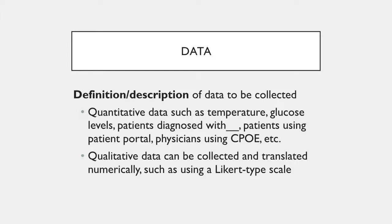Once you know whether you want to do a quantitative or qualitative research study, you must take the next step to define and describe specifically what data you will collect. Quantitative data examples include: What was the temperature of the patient when admitted to the emergency department? What were the glucose levels of patients at the clinic? How many patients have been diagnosed with a particular disease, injury, or condition? How many patients use the patient portal and for what purposes? Or how many physicians are using CPOE — computerized physician order entry software?